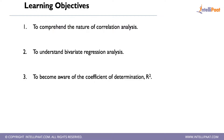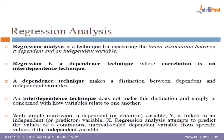What is bivariate regression analysis? The meaning of bivariate is that it involves two variables. If it involves more than two variables, that is called multivariate regression analysis.